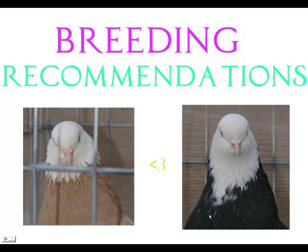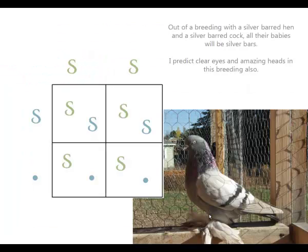Now the breeding recommendations. For time's sake, I've only chosen four pairs of birds to show, and one Punnett square. Out of a breeding with a silver bar hen — she is blue — and a silver bar cock — he's green — all their babies will be silver. These are cocks and they will be silver, carrying silver. And these are hens, and hens do not carry another gene.